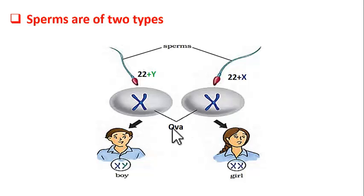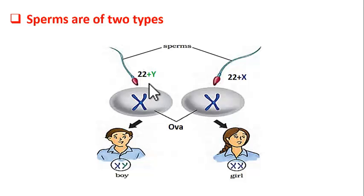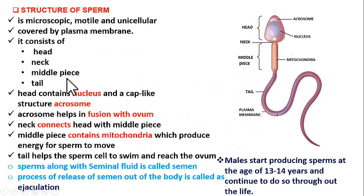The female gametes — that is ova — always contain X chromosome as the sex chromosome. So ova have 22 chromosomes plus sex chromosome, which is always X. During fertilization, if a Y chromosome-containing sperm fuses with the ovum, we get a boy baby. And if an X chromosome-containing sperm fuses with the ovum, we get a girl baby. This is how sex is determined. Depending upon whether the sperm contains X or Y chromosome, sperms are of two types: X sperms and Y sperms. That is about the head.